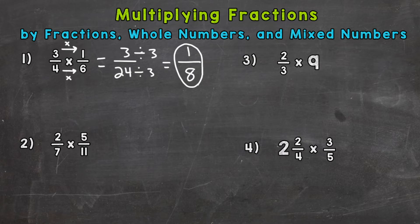On to number two where we have a fraction times a fraction again. So straight across. Two times five is ten. And seven times eleven is 77. The only common factor between 10 and 77 is one. So this is in simplest form. We are done here.